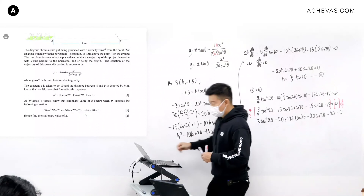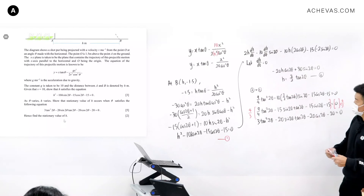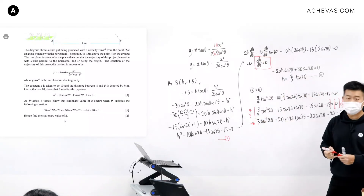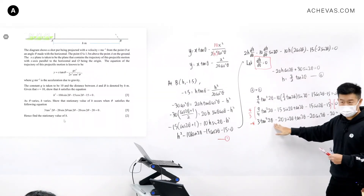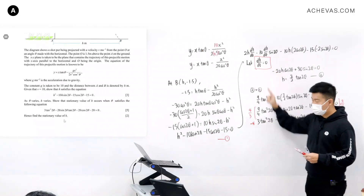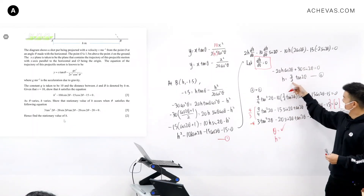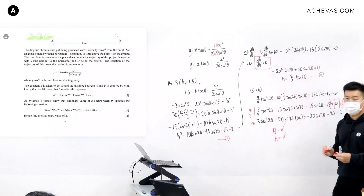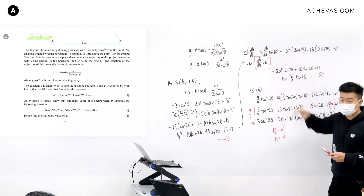From here, we are supposed to find the stationary value of H. To get our bearing once again: this equation was obtained after letting dH/dtheta equal 0, which means that by solving for theta in this equation, it gives me the value of theta that caused H to be stationary. So I will solve for theta, then substitute it back to find the stationary value of H.